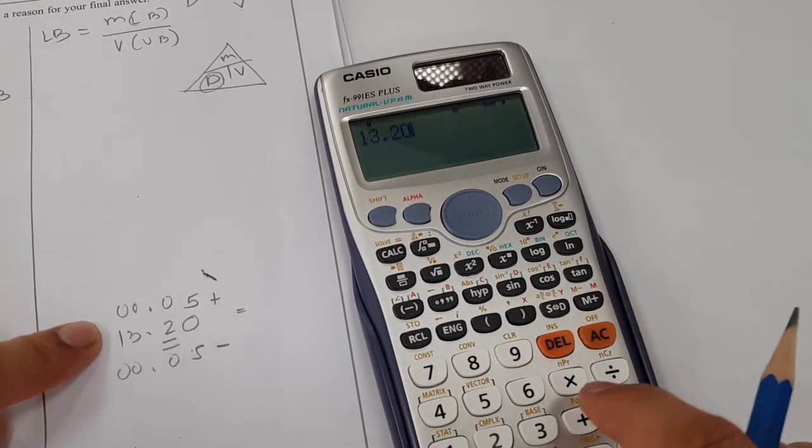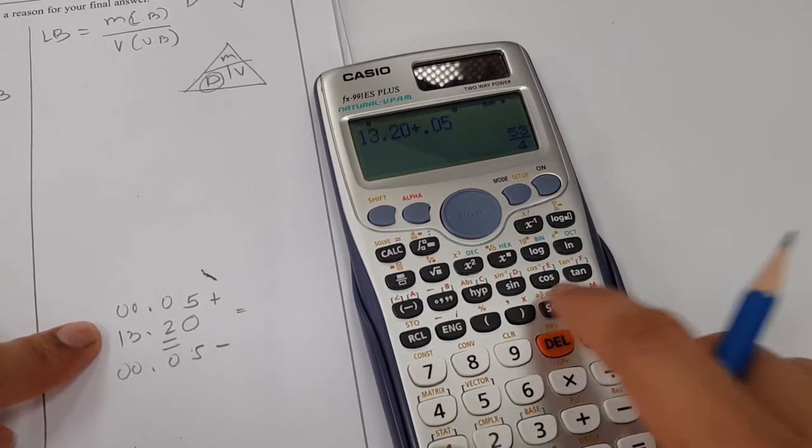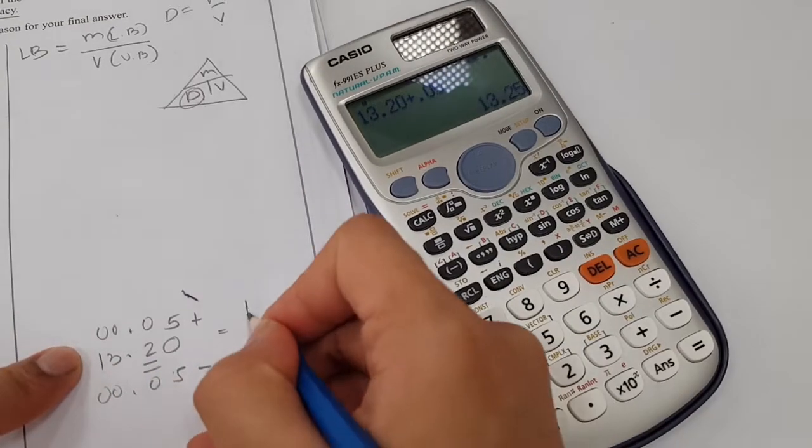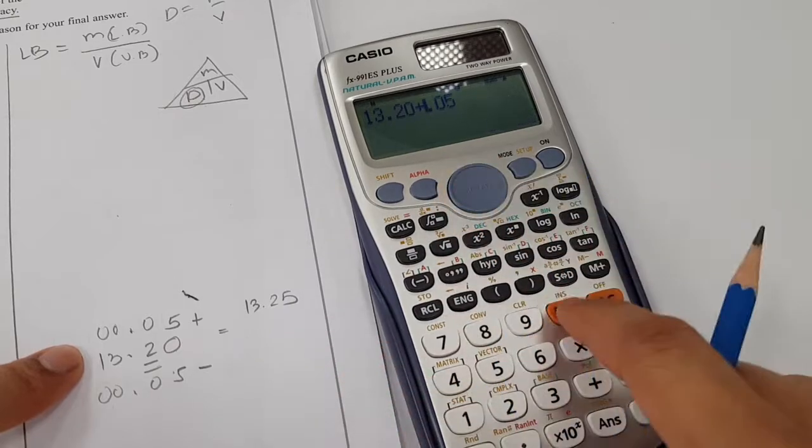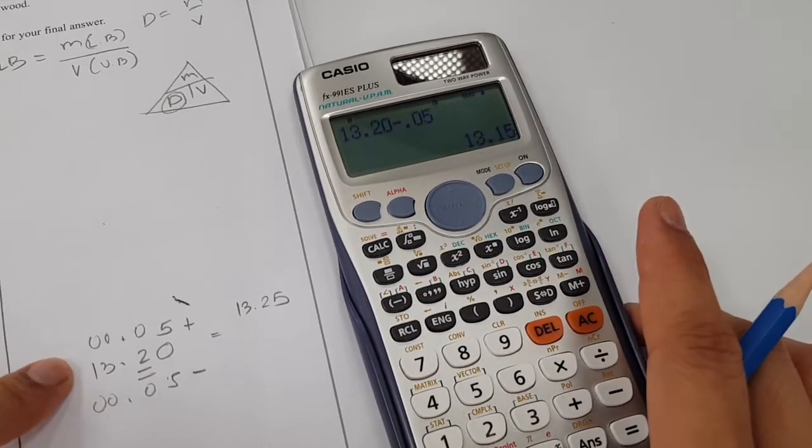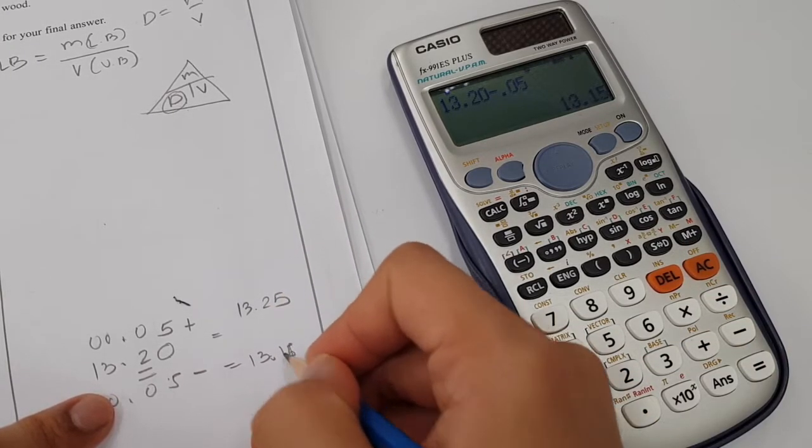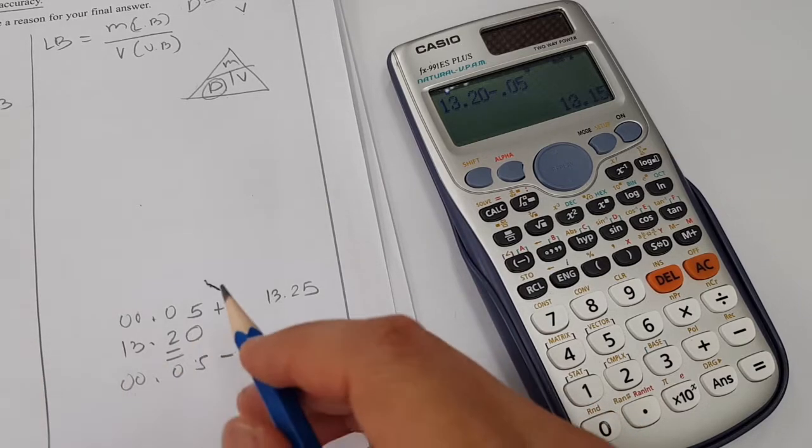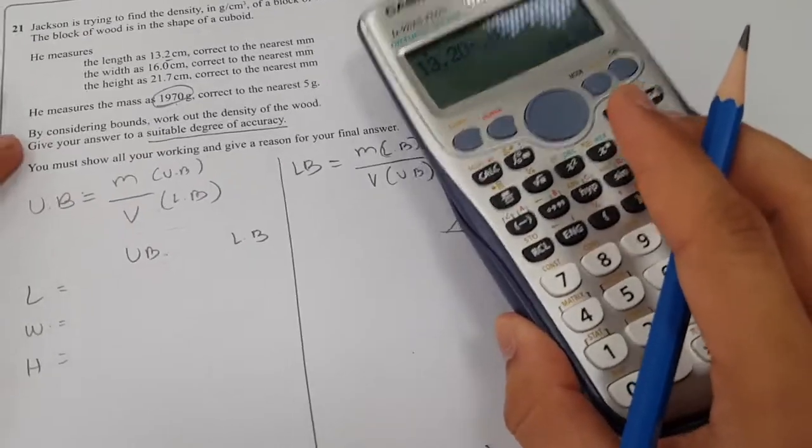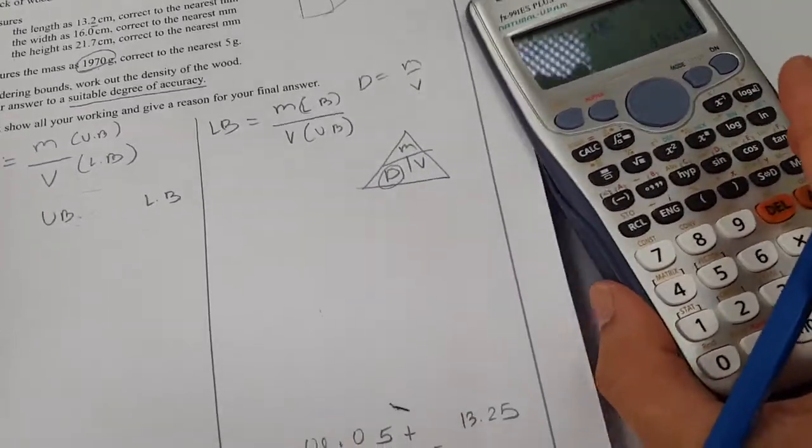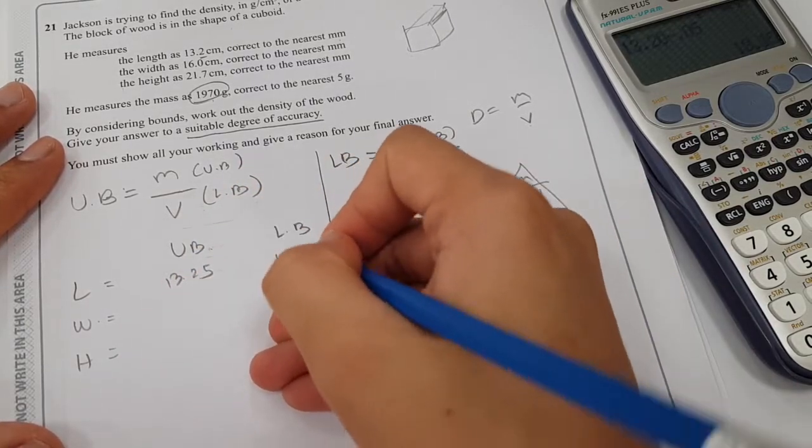We have 13.20 as our estimated value. We just have to add plus 0.05 to get our upper bound, which would be 13.25. And our lower bound would just be minus it, which would be 13.15. This is how I do it. But if you have some other way, maybe you try them. So 13.25 upper bound, 13.15 lower bound.